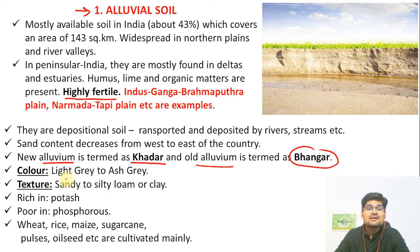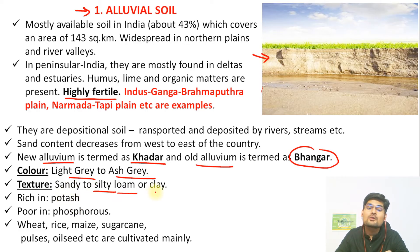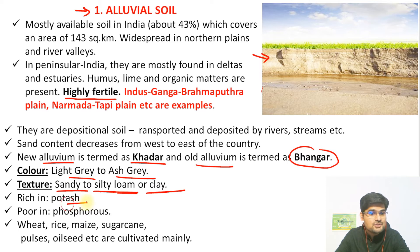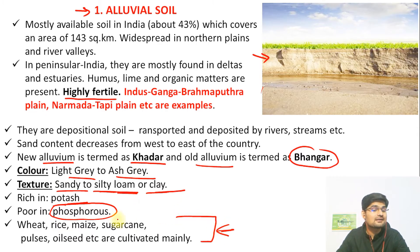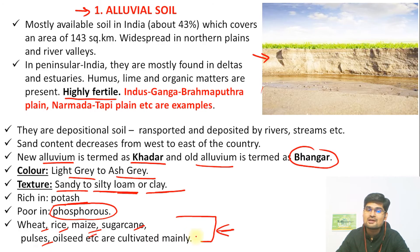Alluvial soils are supposed to be highly fertile. Their color is light gray to ash gray and texture varies from sandy to silty to loam or clay. They are rich in potash but very poor in phosphorus. They support a variety of agricultural systems, with crops like wheat, rice, maize, sugarcane, pulses, and oilseeds. These are the major soils in India according to the Indian system of soil classification.